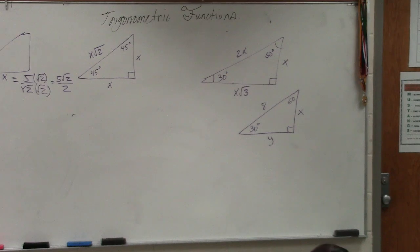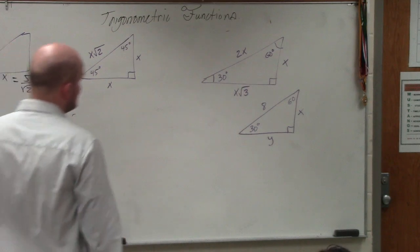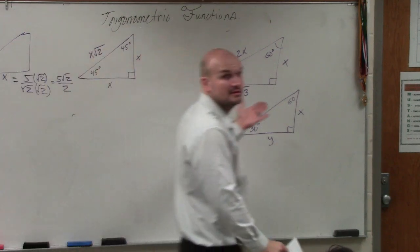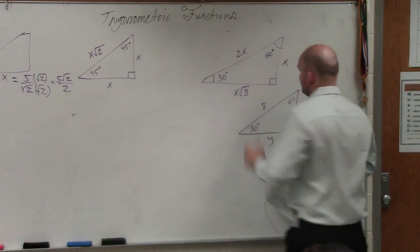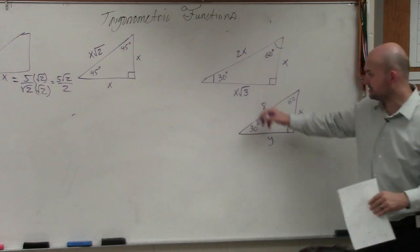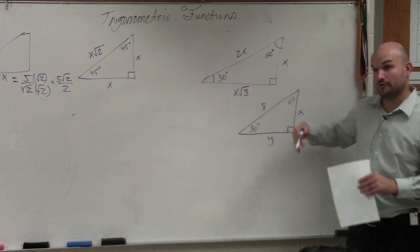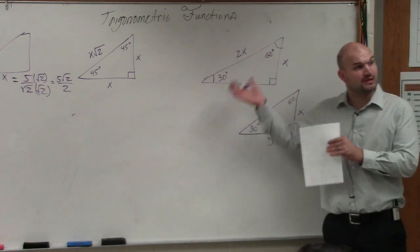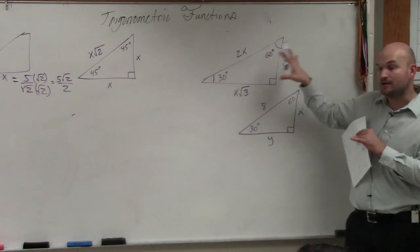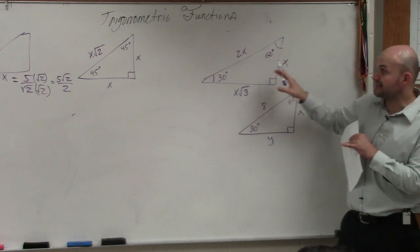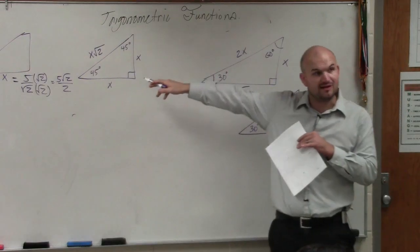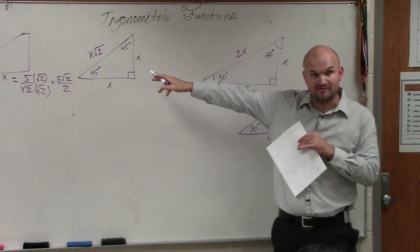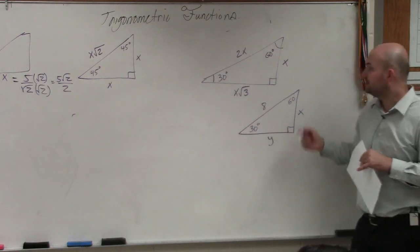All right, so in this example, you guys can see that this is a 30-60-90 triangle. The relationships of the side legs on a 30-60-90 triangle are different than a 45-45-90 triangle.